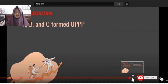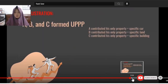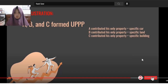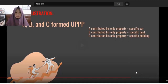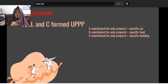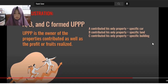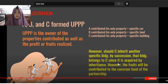To illustrate UPPP: A contributed his only property — a specific car. B contributed his only property — his land. C contributed his property — a building. In their UPPP, those three properties become common property of all three partners, including the profits and fruits realized from them.